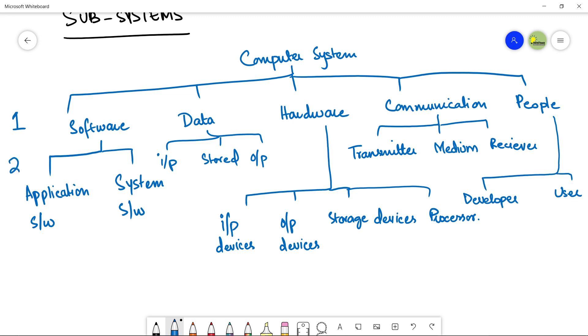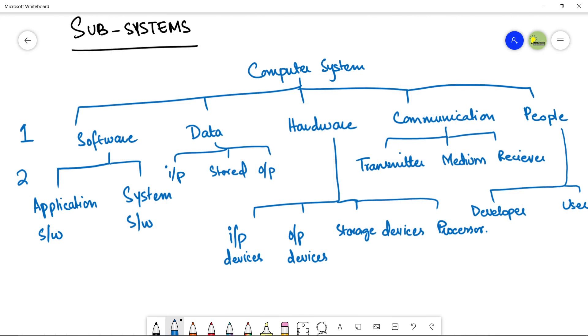Here, you can easily see that how we have divided a computer system into subsystems and into more subsystems. So that a single subsystem, the smallest subsystem is just going to perform a single task.